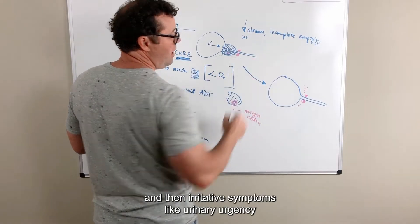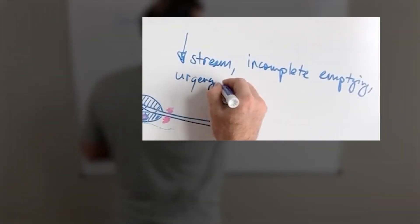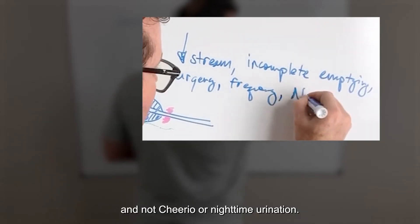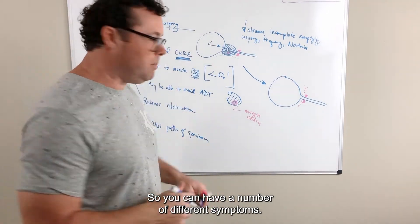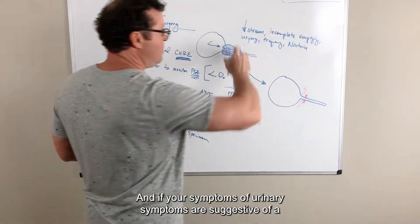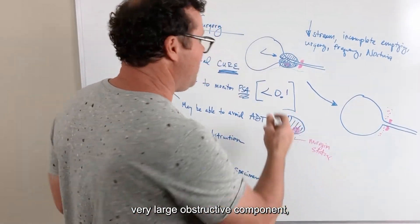and then irritative symptoms like urinary urgency, frequency, and nocturia or nighttime urination. So you can have a number of different symptoms. And if your symptoms of urinary symptoms are suggestive of a very large obstructive component,